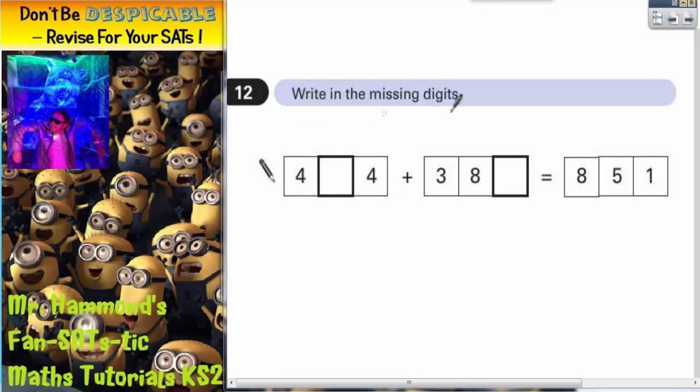Question 12, writing the missing digits. So we've got two three-digit numbers added together, makes 851. Now the trick with this one is how it's been set out in the question. It's been set out side by side, so it makes it very difficult to do anything with it.